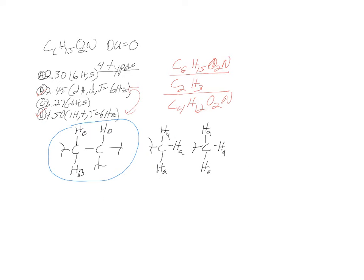HA is now crossed off. HA accounts for C2H6. What do we have left? We'd have C2H6O2N. Now for C — again, six H's, a singlet — so I'm thinking symmetry again, two CH3s with no neighbors.